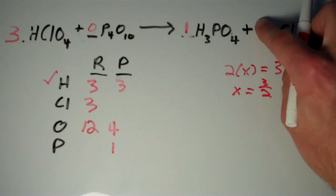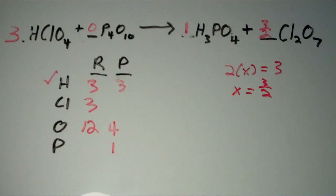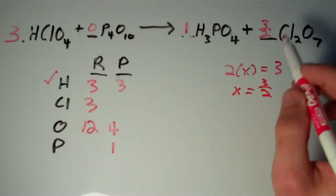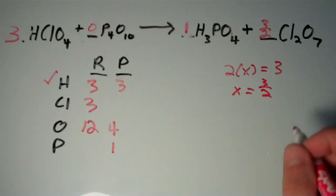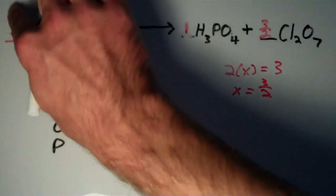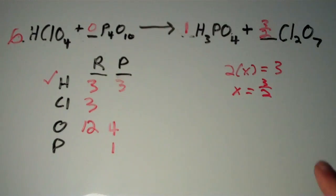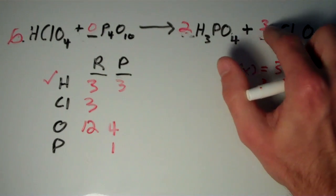And you can check that if I multiply three halves by two, I'll get three chlorines. But notice that this is a fraction. We need to change this into whole numbers. So what we're going to do is we're going to multiply everything by the denominator which is two. Three times two, six. Zero times two is just going to be zero. One times two, two. And three halves times two is just going to be three.